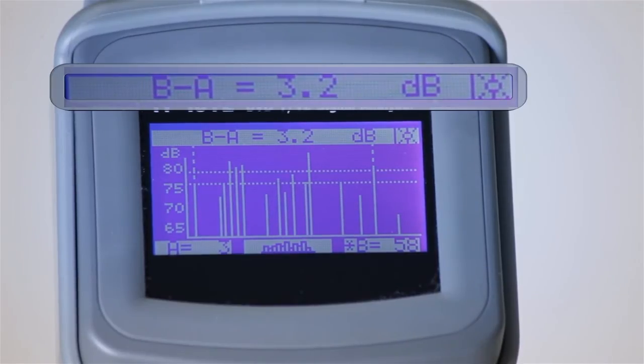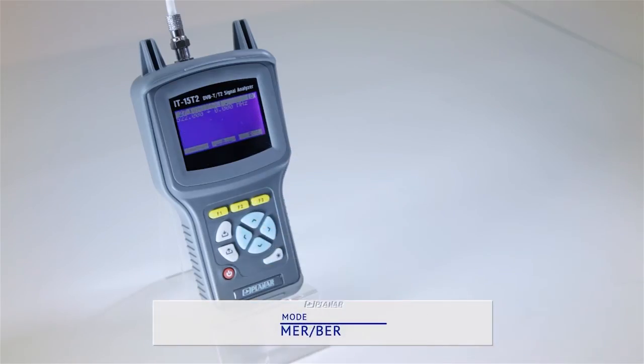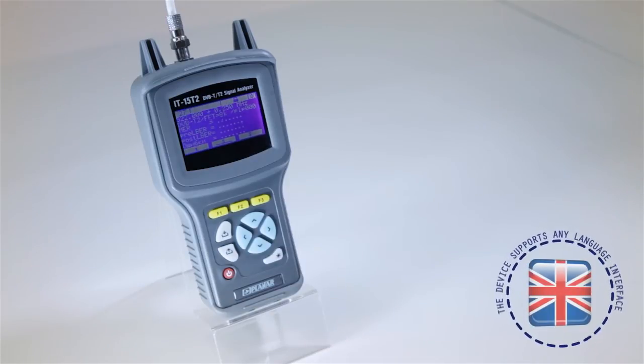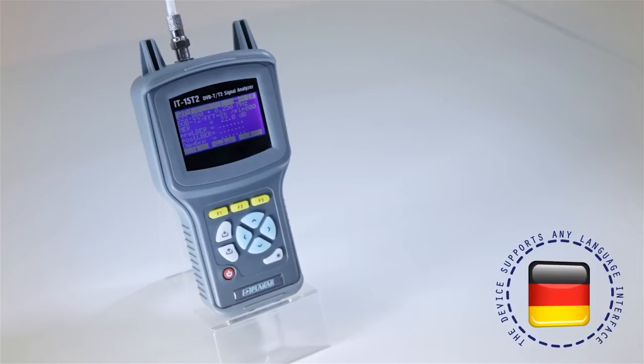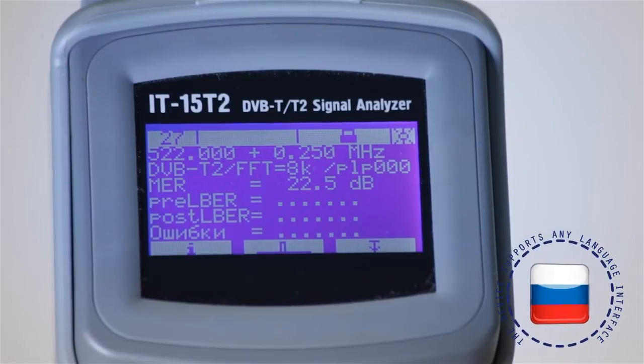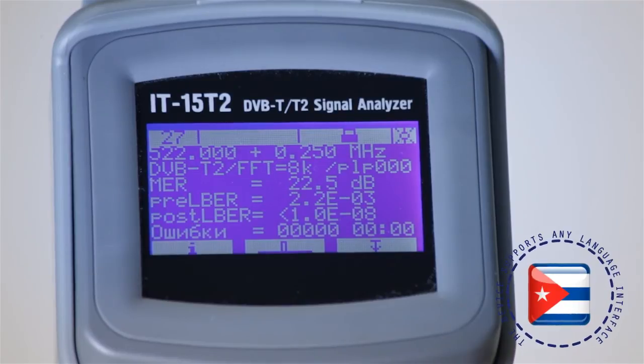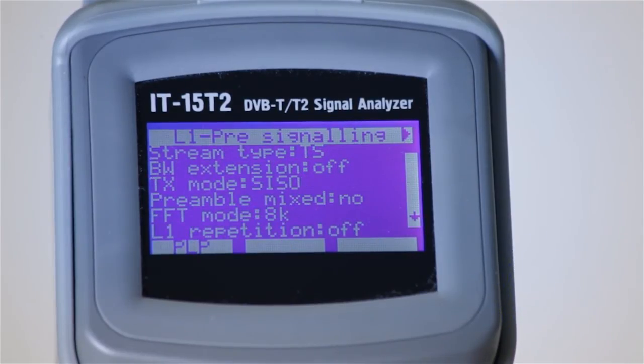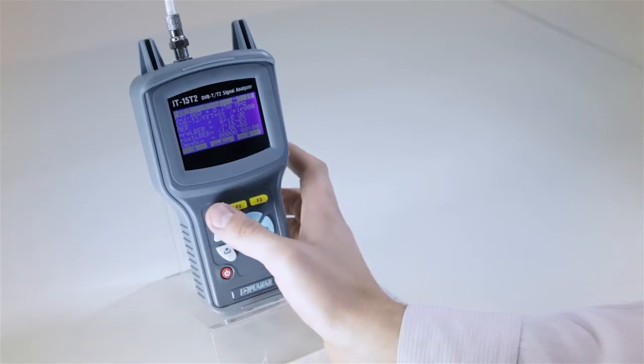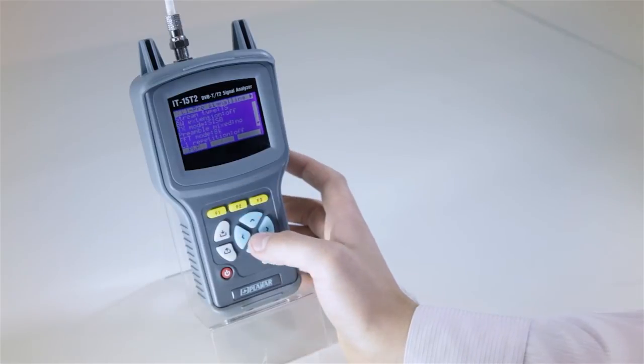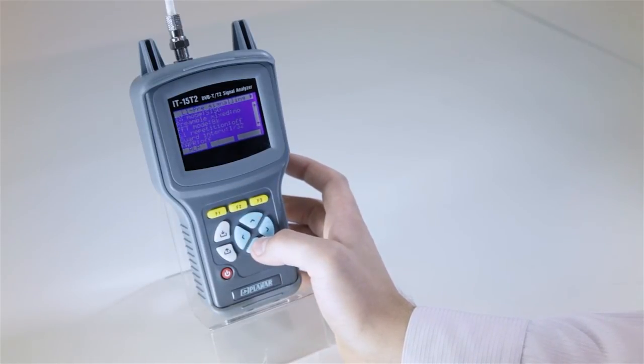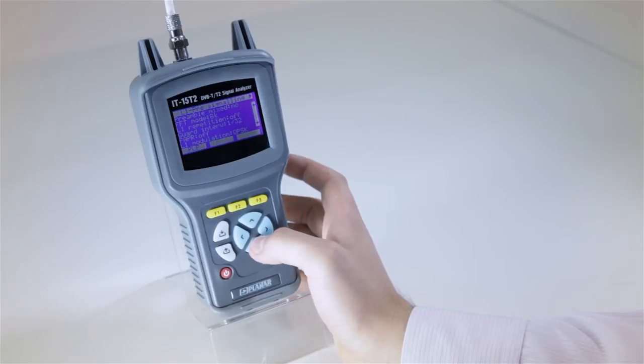The next mode is MER and BER. It is one of the fundamental measurements for determining the received quality of digital TV channels. For DVB-T2 and DVB-T channels, the analyzer measures MER and BER values, as well as the number of error packets at the output. The modulation parameters of a measured channel are shown in table format.